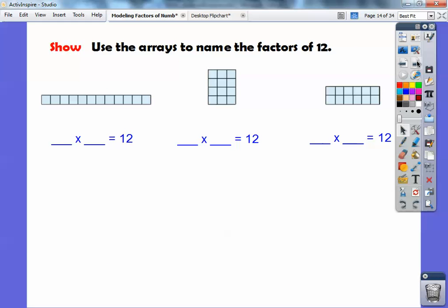Alright, so use the arrays here to name the factors of 12, okay? So, there's 12 tiles here. This is going to be 1 times 12 equals 12. That's what will go right here, okay? You guys with me? Alright, and then this one's going to be 1, 2, 3, 4 times 3. 4 times 3 also equals 12, and by golly, there's 12 little tiles right there. And then this one's going to be 2 by 6, okay? 2 by 6.